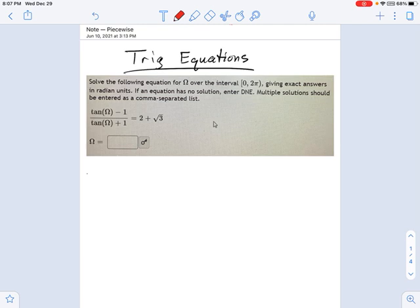The number one rule with fractions and equations is get rid of the fractions. Multiply both sides by something that will cause the denominator to cancel out. So here's what I mean. We're going to write this down: tan(Ω) - 1 divided by tan(Ω) + 1 equals this thing over here, 2 + √3.